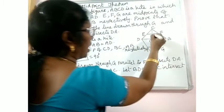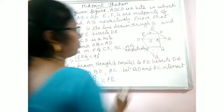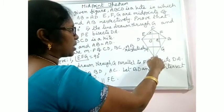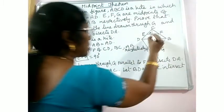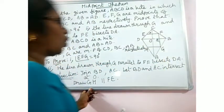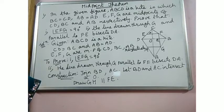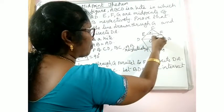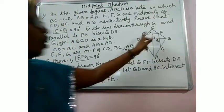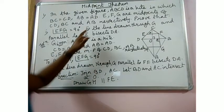Let us name the intersection point of EF and FG with the diagonals. Let P be on EF and Q on FG. Since EF is parallel to BD, PF is parallel to OQ. Since FG is parallel to CA, PO is parallel to FQ. Therefore POQF is a parallelogram, because both pairs of opposite sides are parallel. In a parallelogram, opposite angles are equal. Since angle POQ is 90 degrees, angle PFQ — which is angle EFG — is also 90 degrees.